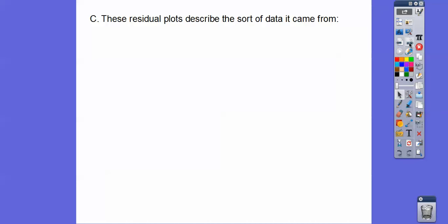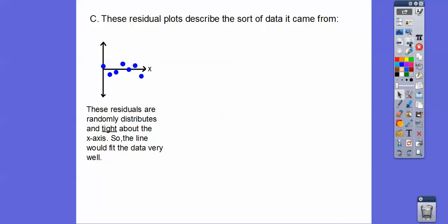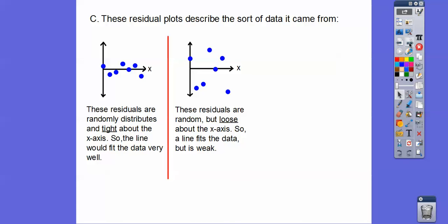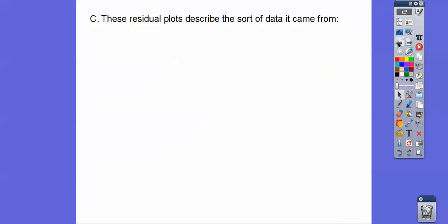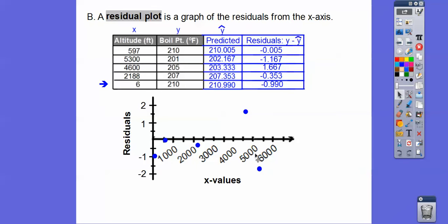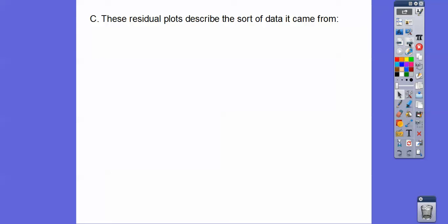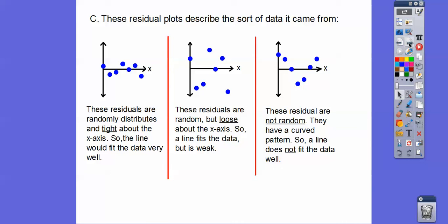When we talk about residual plots, here's how to describe the data. This is our most desired kind of residual plot: residuals that are randomly distributed and tight about the x-axis. If they're nice and close to the x-axis, then our trend line is a good fit of the data. These residuals here are also random, but they're loose about the x-axis — so a line would fit the data, but it's not as strong. Our example here — our line fits the data, but it's not as strong as it could be. And if you get a residual plot that has a curved sort of fashion, usually a line doesn't fit that data very well.